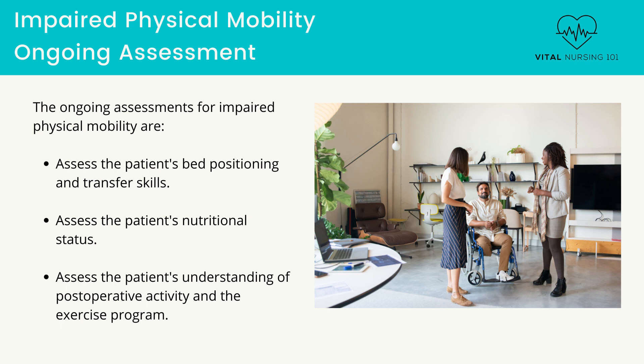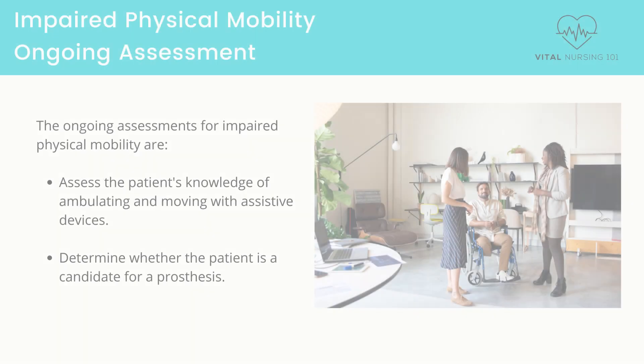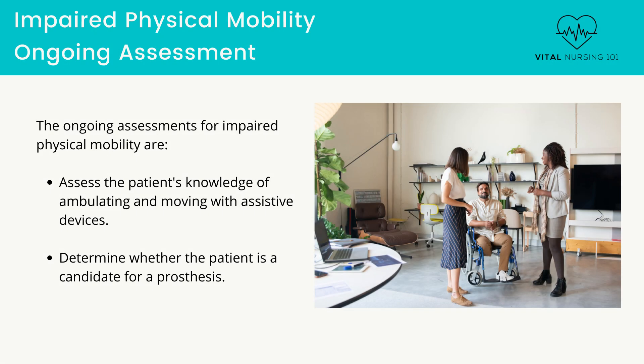Postoperatively, range of motion exercises will be encouraged in all unaffected extremities. Some patients will begin to ambulate soon after surgery, while other patients will remain non-weight-bearing until the temporary prosthesis is made, four to six weeks after surgery. At that time, physical therapists will implement a program of functional training with the patient and the prosthesis.